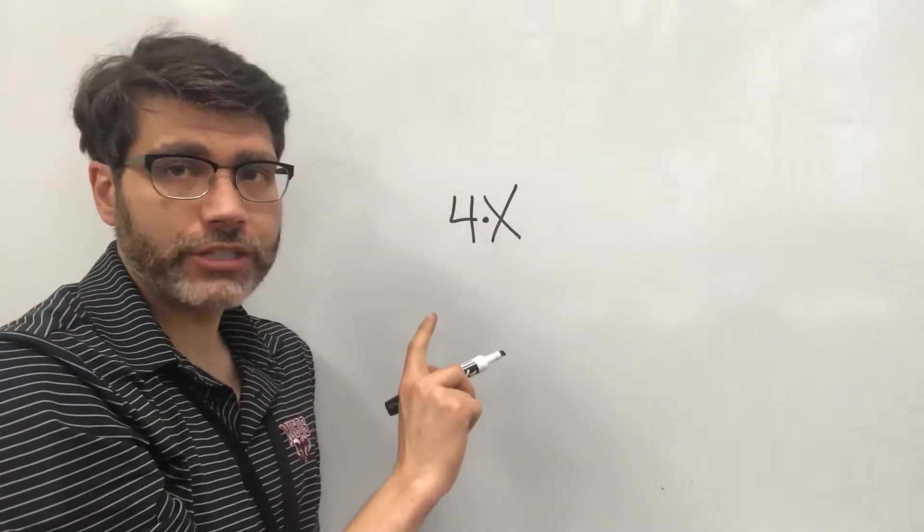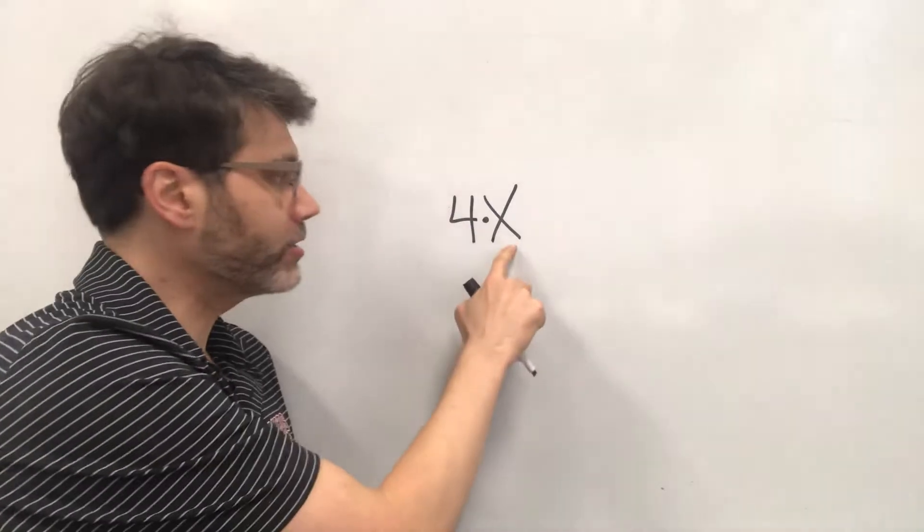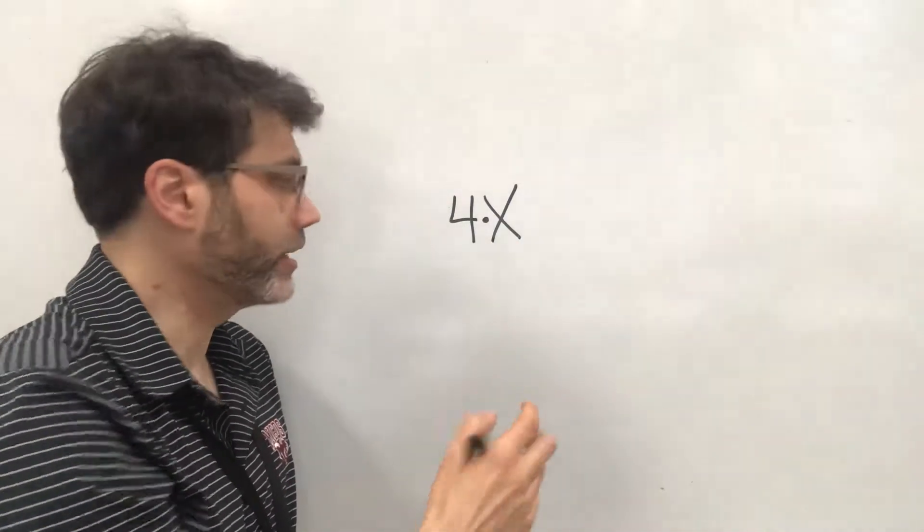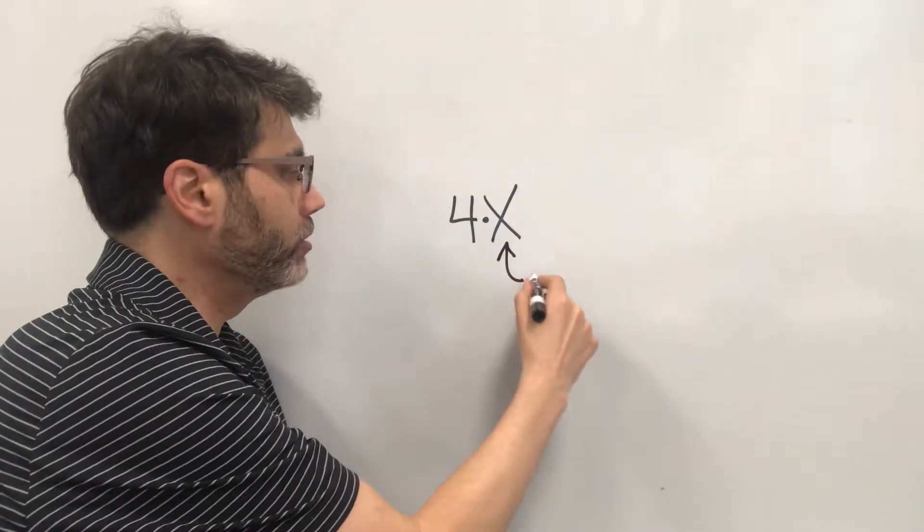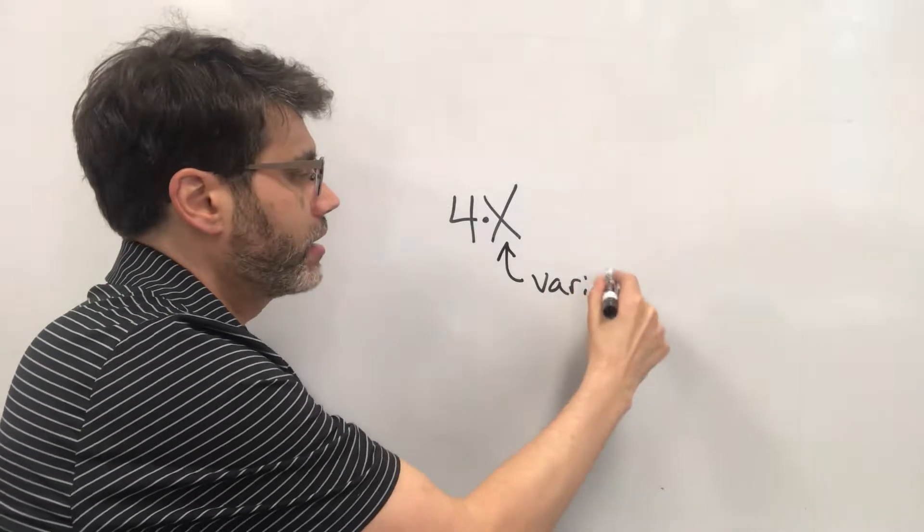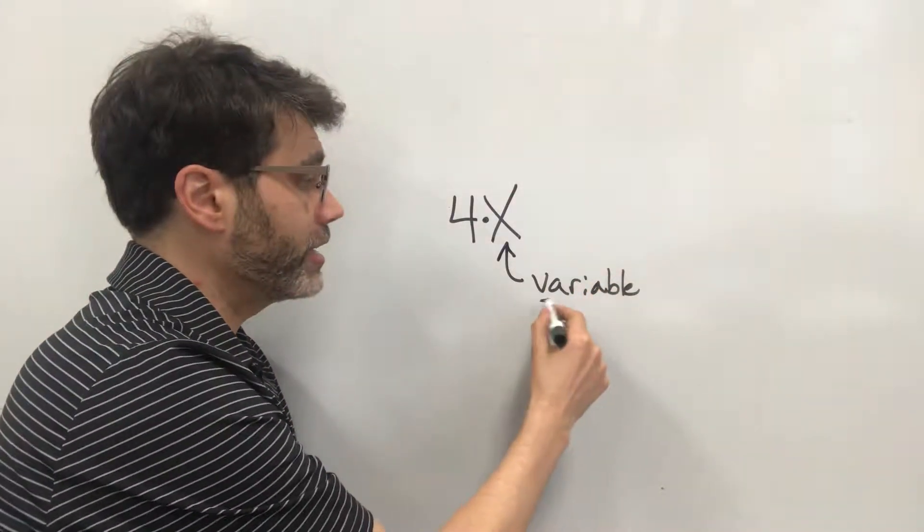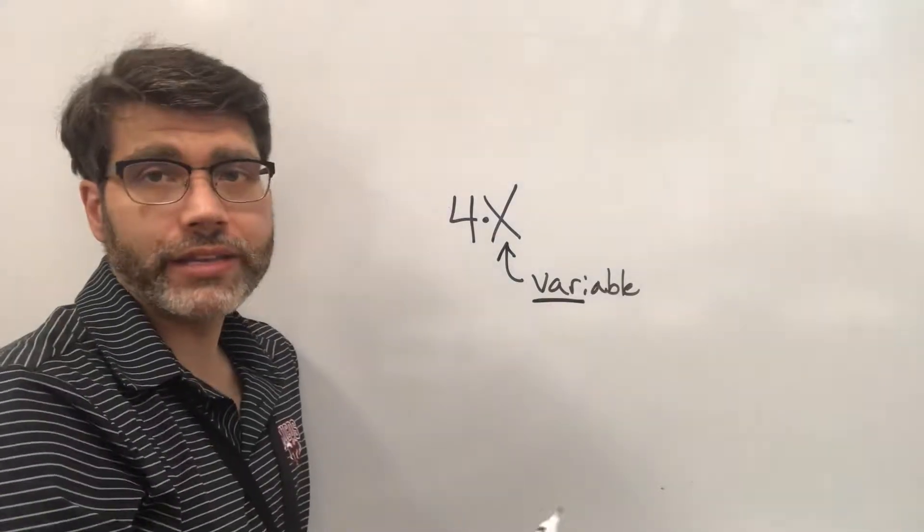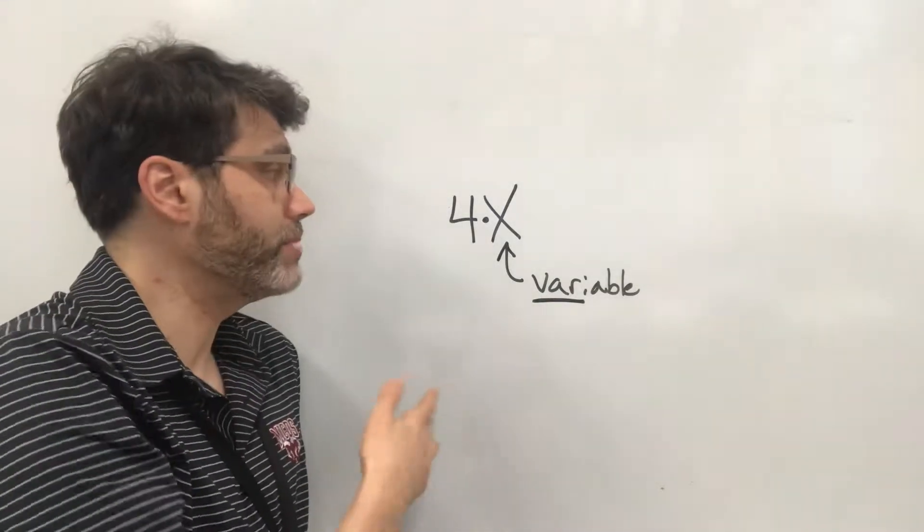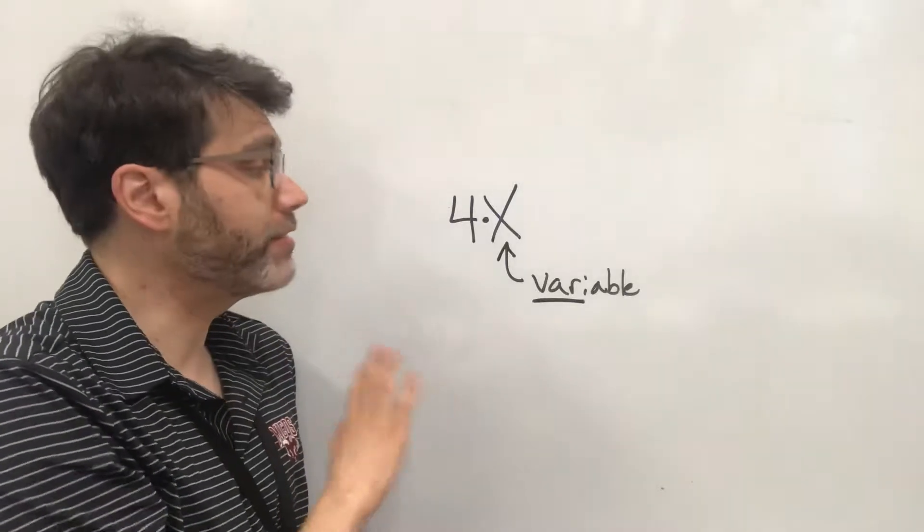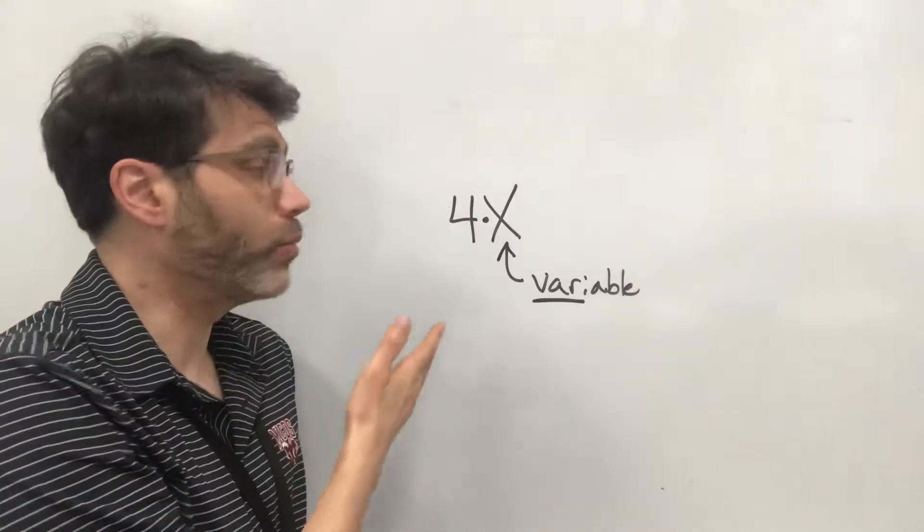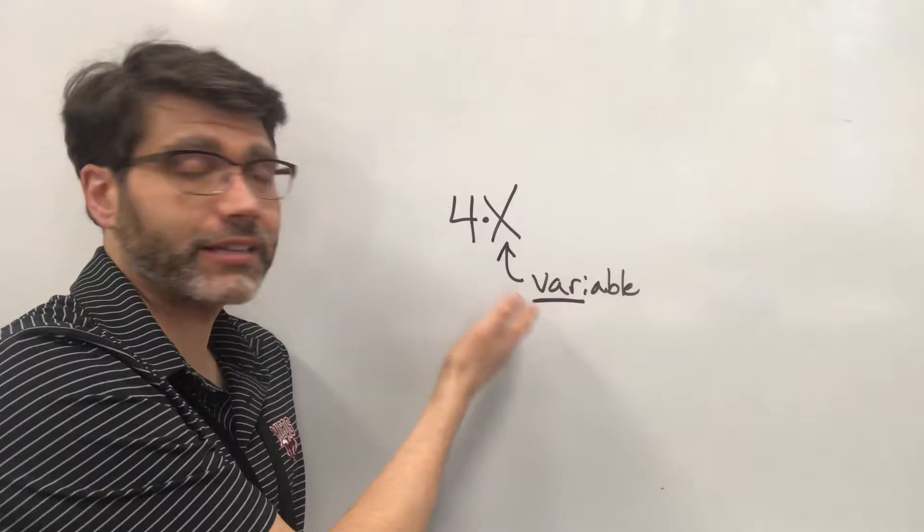So let's go over some terminology. X or any other letter that we're using is called a variable. The reason why it's called a variable is because it could vary as to what it is and we don't know what it is. In fact it could be anything. We don't have enough information actually to figure out what the value of x is.